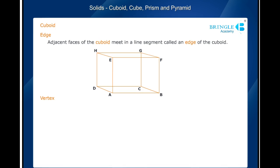Vertex. In a cuboid, we find eight corners. Each corner is called the vertex of the cuboid. The cuboid shown here has eight vertices. The edges meet at the vertices. In the figure, the vertices are A, B, C, D, E, F, G, and H.